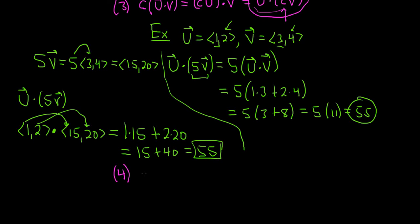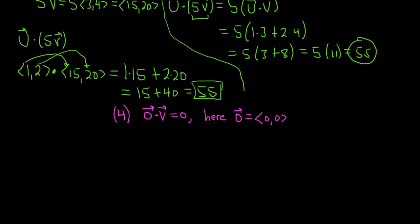So 4. The next property says if you take the 0 vector, which is the vector whose components are all 0s, and you dot it with any other vector, you get the number 0. So note here, the 0 vector, let's just say we're in two dimensions, would be the vector whose components are 0, 0. If it was three dimensions, we would have 0, 0, 0. If we're looking at n dimensional space, then you have n copies of 0. You can look at vectors in any dimension.